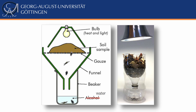The heat source is a natural repellent for soil organisms and the animals move away from the heat. Additionally, the heat is drying out the samples from the top, and drought is also something soil organisms do not like. Therefore they start crawling down towards areas that are still cooler and still humid. After a couple of days, when the sample is completely dry, the organisms finally drop out of the sample into the cool liquid below.